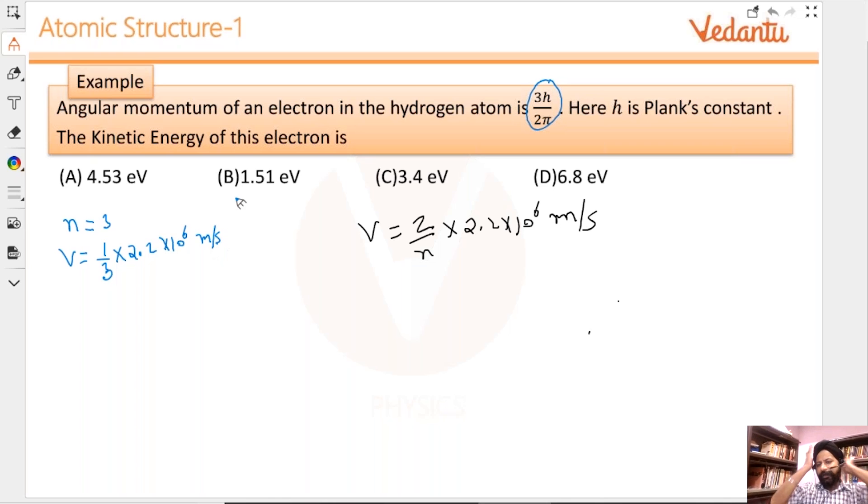If n equals 3 and it's a hydrogen atom, the velocity is 1/3 times 2.2 × 10⁶ meters per second. Now kinetic energy is half times mass - you don't have to write 9.1 whatever, mass is 10⁻³¹. v² is 1/9 because I'm squaring all this.